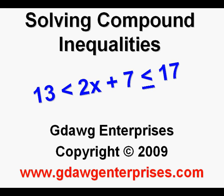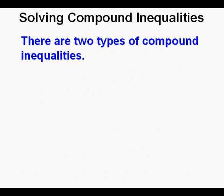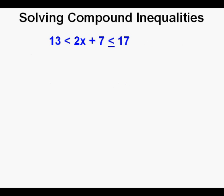Solving compound inequalities. There are two types of compound inequalities. The first type is where the inequality has three sections separated by two inequality symbols. The second is the or type where there are two inequalities separated by the word or.